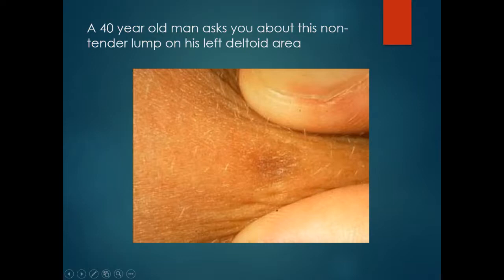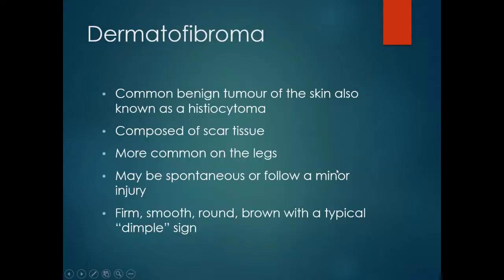A 40 year old man asks you about this non-tender lump on his left deltoid area. The lump is indurated — you pinch the skin and it becomes indented, which is the dimple sign of a dermatofibroma, which is benign.